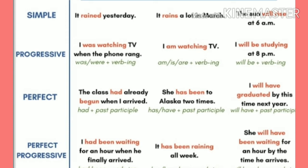For perfect tense we say 'the class had already begun when I arrived.' For past perfect we say 'she had been to Alaska two times.' And in future perfect we say 'I will have graduated by this time next year.' In perfect progressive tense we say 'I had been waiting for an hour when he finally arrived.'